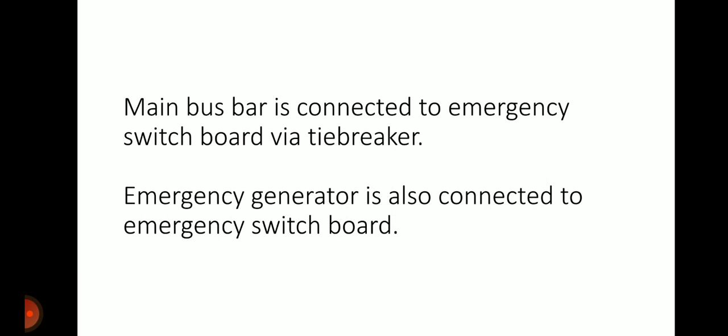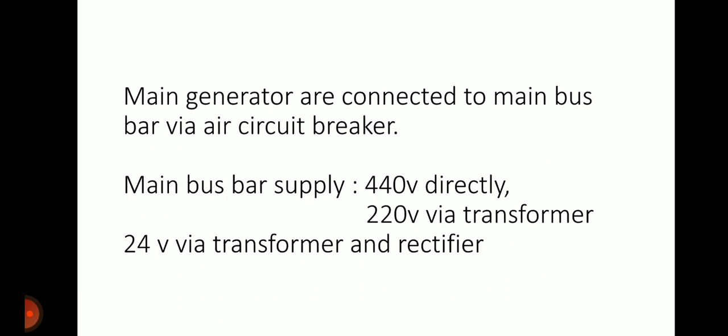The main bus bar is connected to the emergency switchboard via a tie breaker, and the emergency generator is also connected to the emergency switchboard. In an emergency, the system should not get tripped — it should automatically run in case of any blackout.